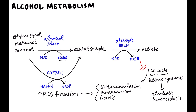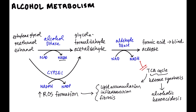When methanol is broken down by alcohol dehydrogenase, it becomes formaldehyde. Formaldehyde, when broken down by aldehyde dehydrogenase, becomes formate or formic acid. Formic acid is toxic to the eyes and can cause blindness — that's the end result of methanol poisoning. Ethylene glycol gets first converted to glycolaldehyde, and then that gets converted by aldehyde dehydrogenase to oxalate. Oxalate forms stones in the kidneys, causing renal failure.